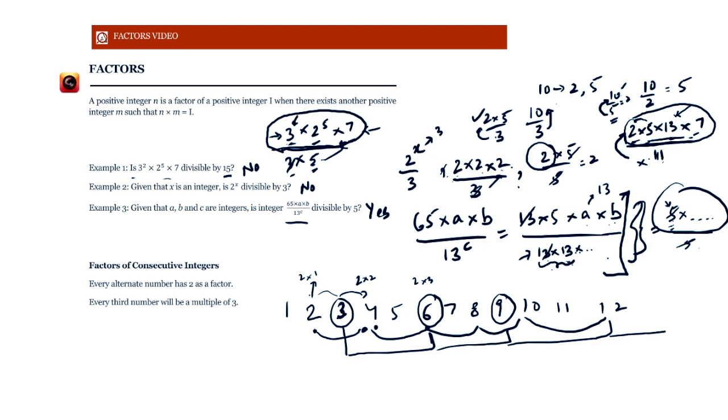What about 4? Look at 4. So the fourth integer, positive integer is a multiple of 4, 4 into 1, and then next will appear after another 4 steps. Then next will appear after another 4 steps and so on and so forth.